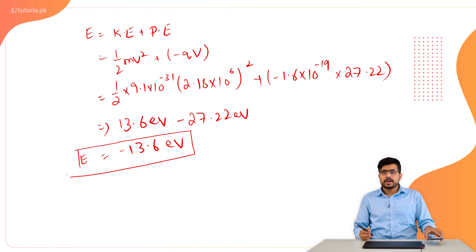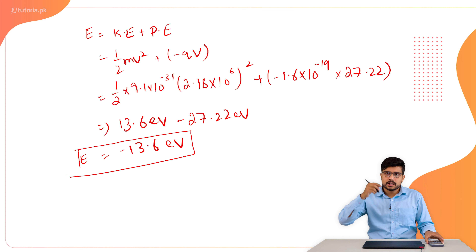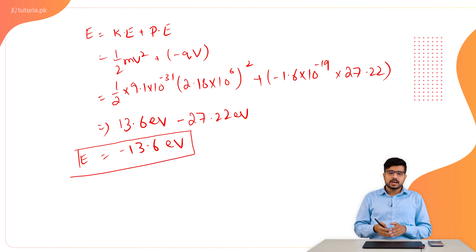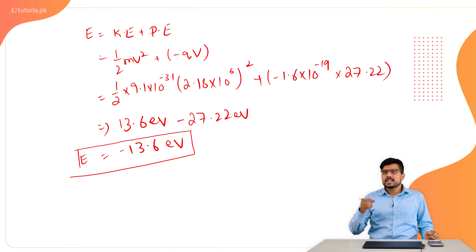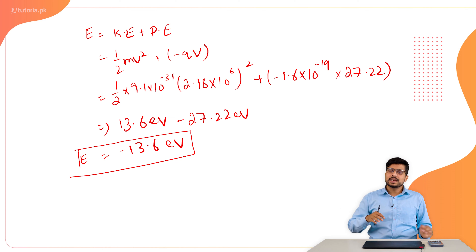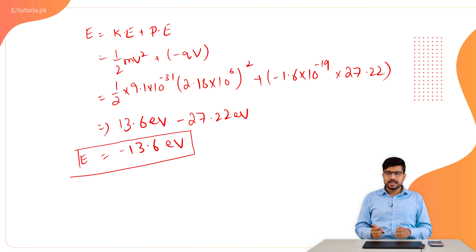So we have found two things: one was electric potential and the other was total energy. The third thing is ionization energy — it is the energy required to remove the electron from the orbit.